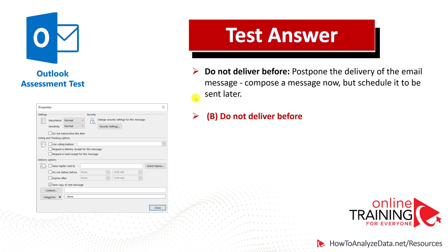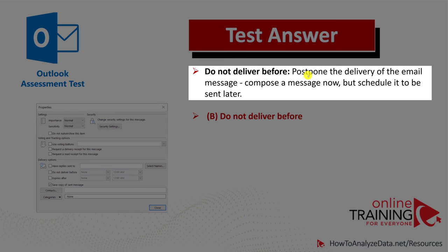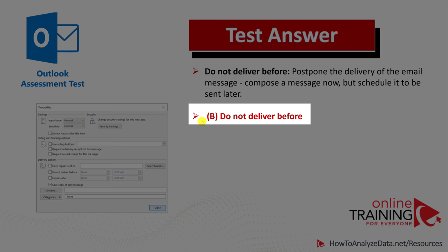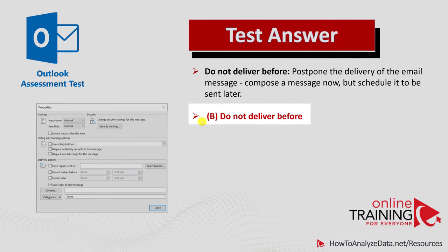Let's recap. The Do Not Deliver Before option postpones the delivery of an email message, allowing you to compose and finalize it now but schedule it for delivery later. So the correct choice here is Choice B, Do Not Deliver Before. Hopefully you've nailed this question.